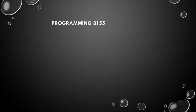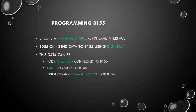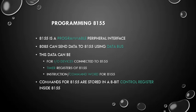Programming 8155: 8155 is a programmable peripheral interface. 8085 can send data to 8155 using the data bus. This data can be for input/output devices connected to 8155, timer registers of 8155, or instruction/command words for 8155. Commands for 8155 are stored in an 8-bit control register inside 8155.